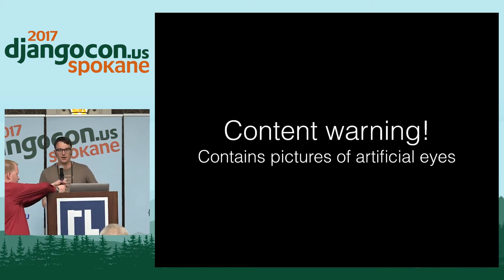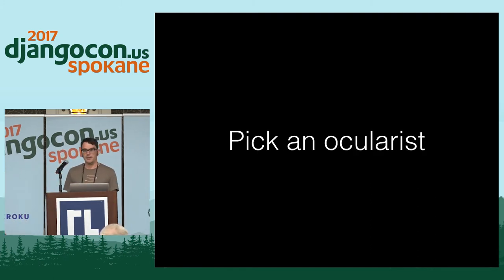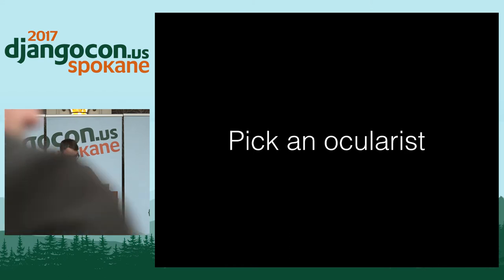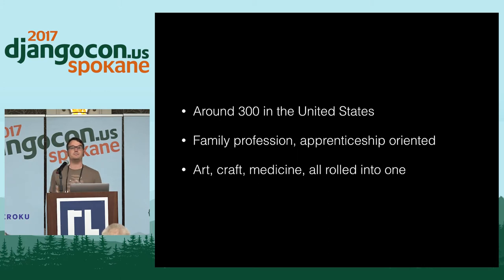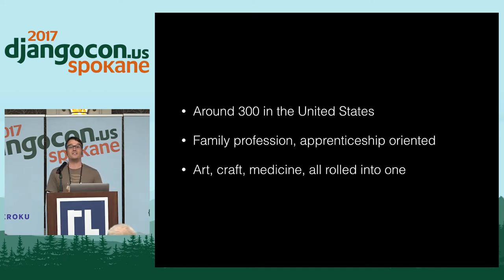An unexpected highlight of this otherwise pretty awful experience is I got to learn all about eye making. If you need a new eye made, I've got a very good recommendation. The first thing you have to do is pick your eye maker. Eye makers are called ocularists. There are about 300 of them in the United States. It's a very niche, family profession — you basically have to apprentice with someone, and ocularists are almost all related to each other.